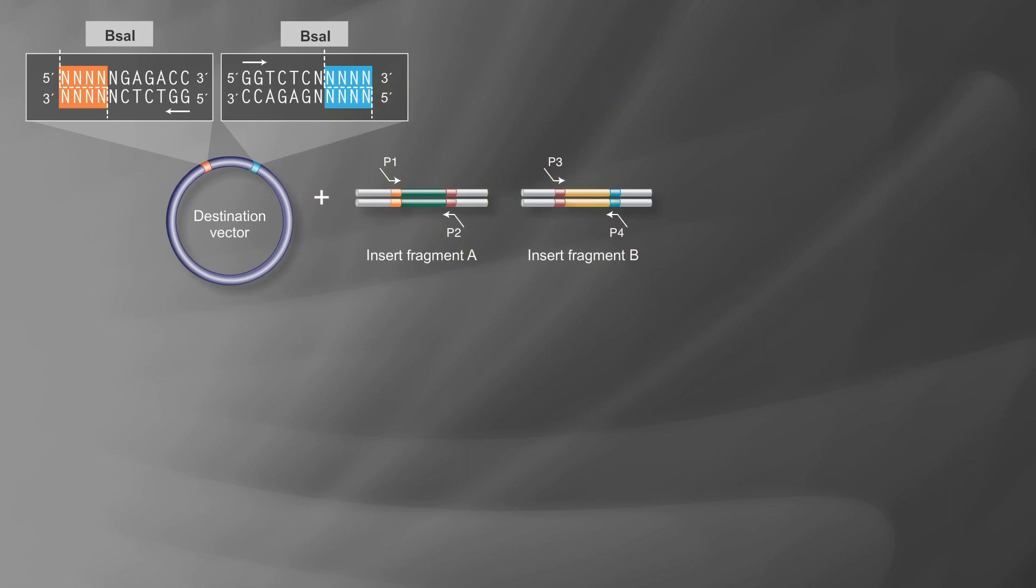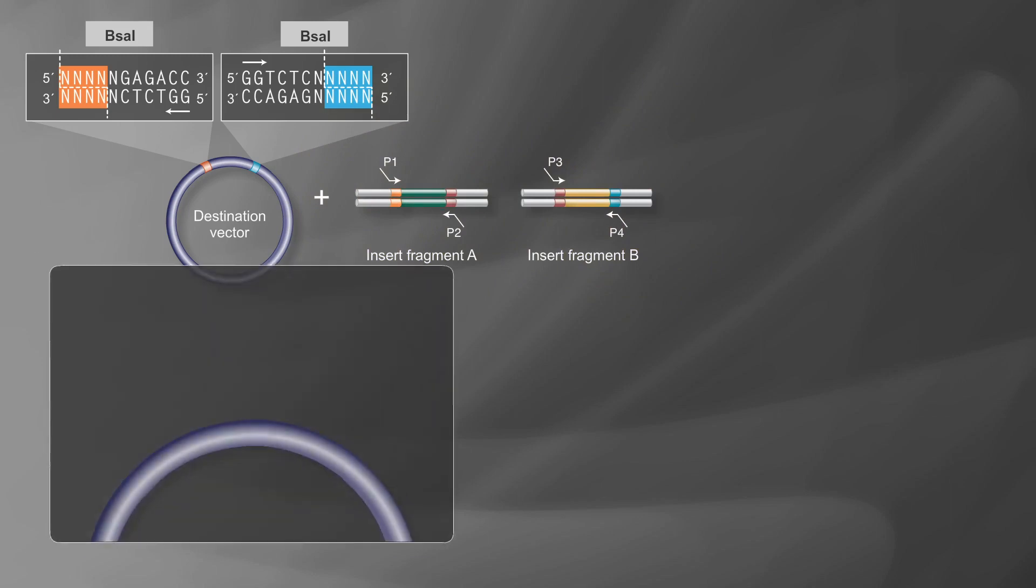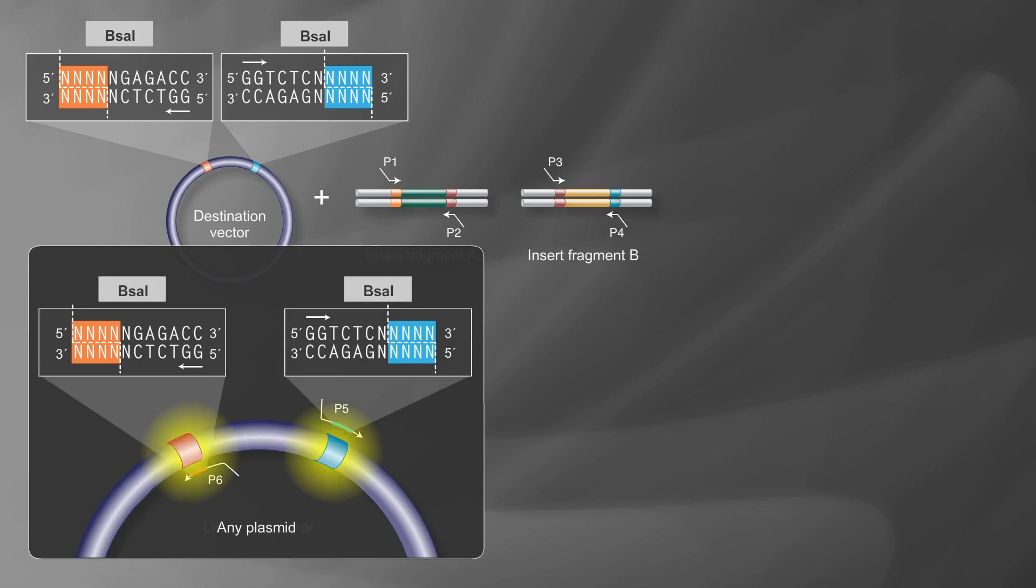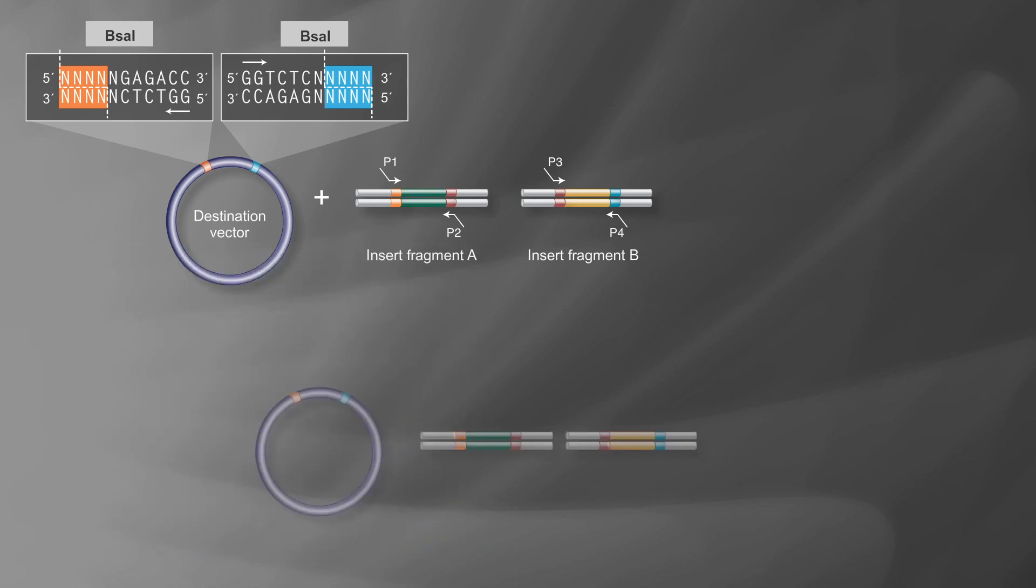If a destination vector with BSA1 flanking sequences is not available, BSA1 sites can similarly be introduced into any plasmid sequence by PCR to make a linearized form of the destination vector.